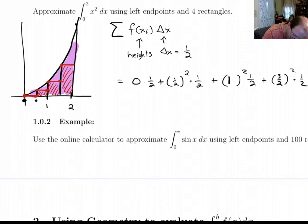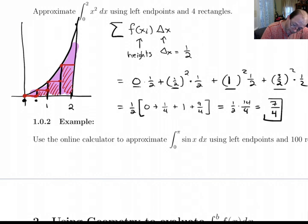Now notice this 1 half, I can factor it out, since it's multiplied on all of them. And what we're left with is 0 plus 1 fourth, plus 1, plus 3 half squared is 9 fourths. So if we add that up, we've got 9 fourths, 10 fourths, 14 fourths. So that winds up being 7 over 4. And that is our approximation.